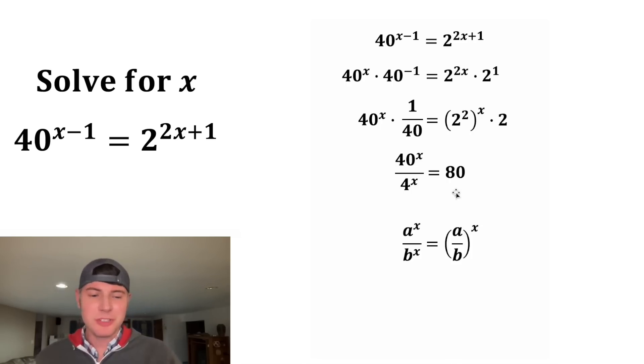Let's bring in some more notes. Anytime you have something like a to the x over b to the x, you can rewrite that as a over b, the whole thing to the x. So that means if we have 40 to the x over 4 to the x, we can rewrite that as 40 over 4, whole thing to the x. So we can bring this over here and that will also be equal to 80.